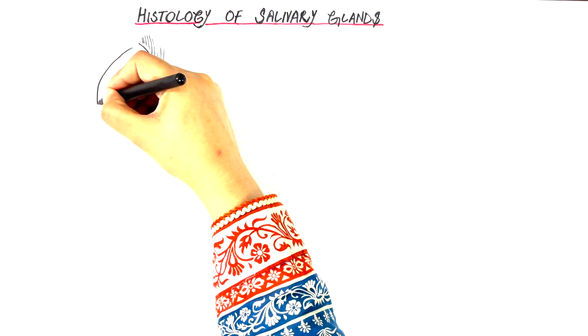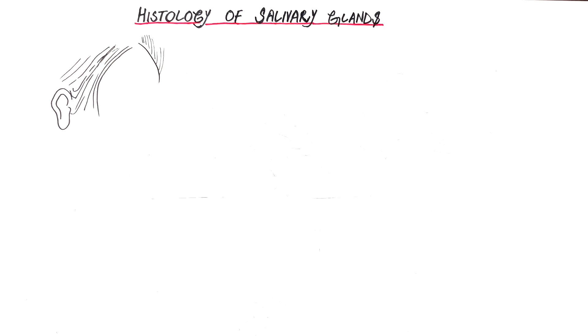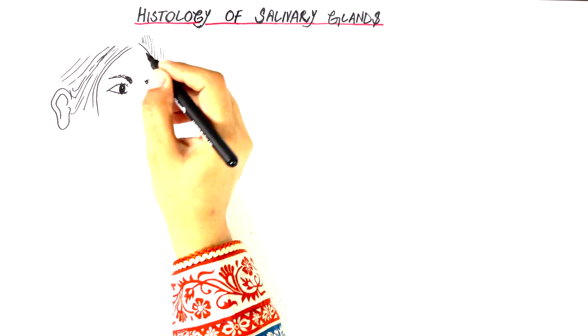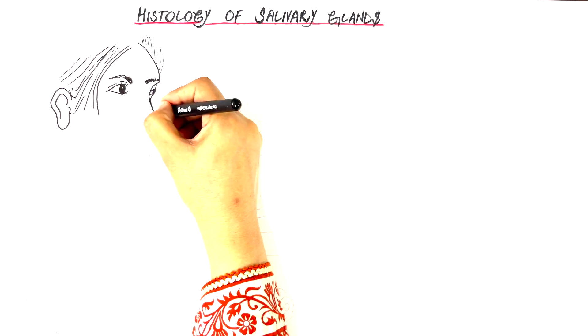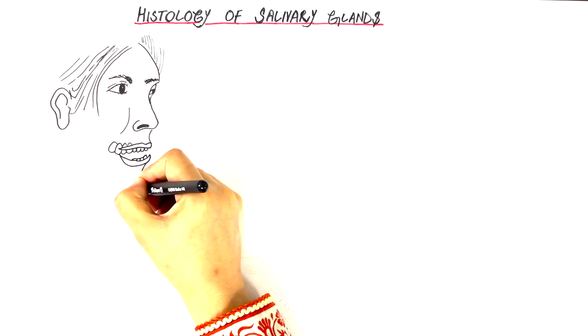The three main salivary glands we studied so far were the parotid, the submandibular, and the sublingual glands, shown here in the diagram.